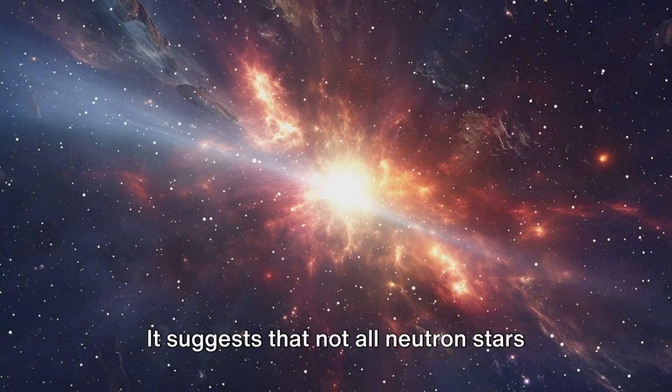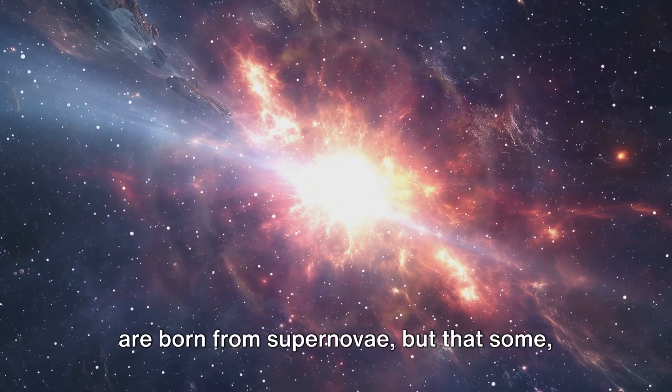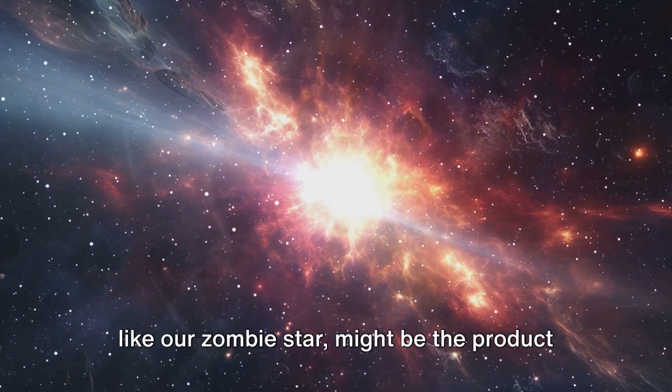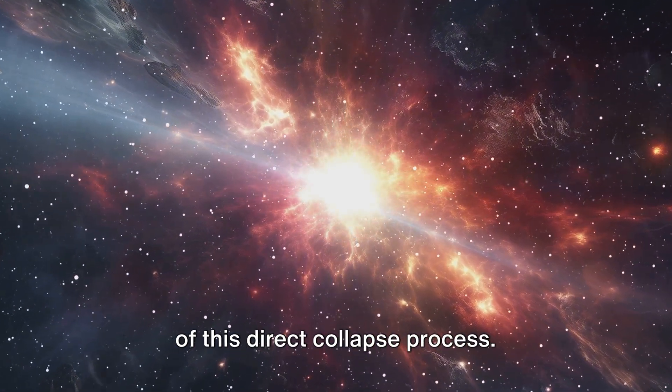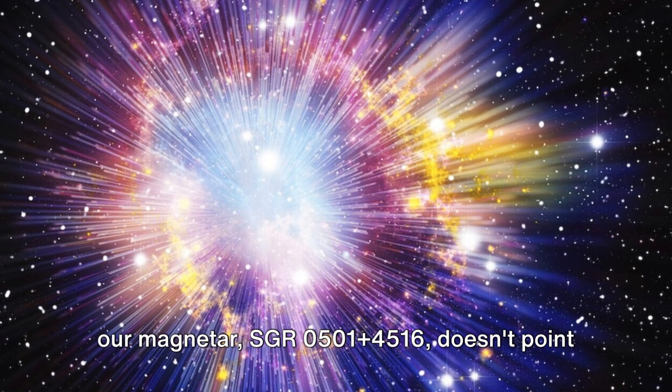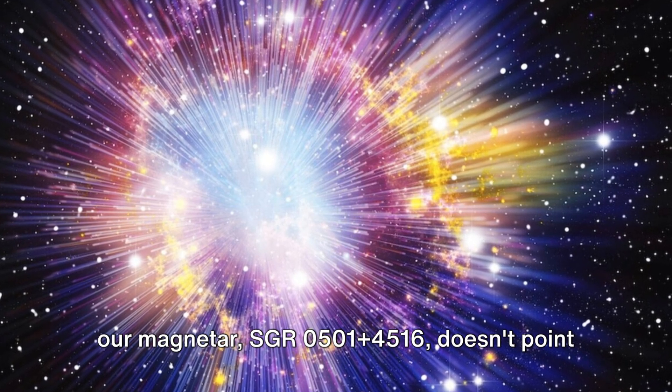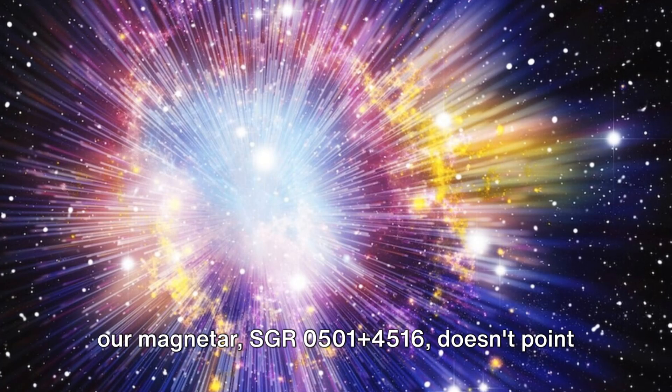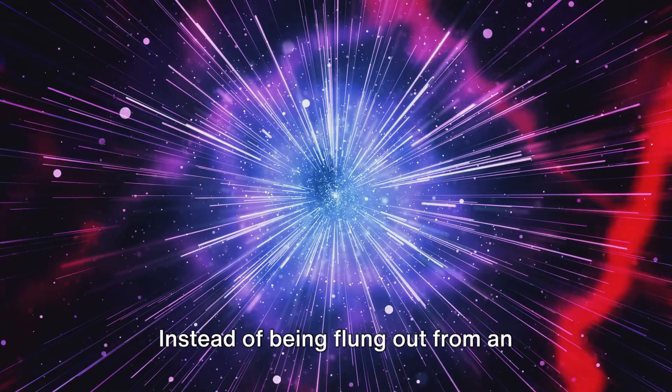This radical theory is not just an exciting thought experiment. It challenges the traditional understanding of neutron star formation. It suggests that not all neutron stars are born from supernovae, but that some, like our zombie star, might be the product of this direct collapse process. This could explain why the trajectory of our magnetar, SGR 0501 plus 4516, doesn't point back to a supernova remnant.